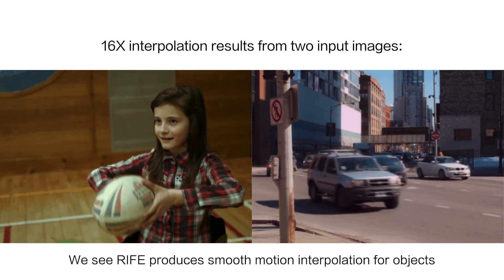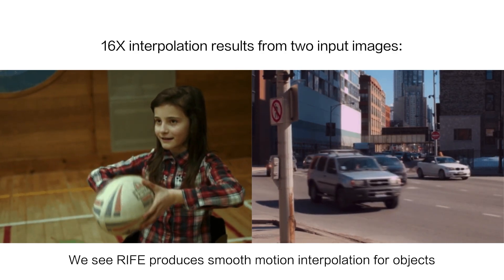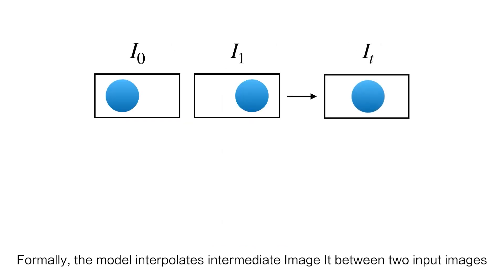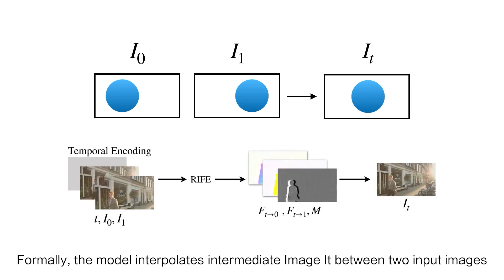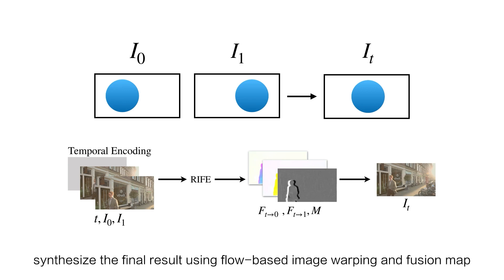We show 16 times interpolation results from two input images. We can see RIFE produces smooth motion interpolation for objects. Formally, the model interpolates intermediate image IT between two input images. We follow the previous optical flow-based paradigm to synthesize the final result using flow-based image warping and fusion map.